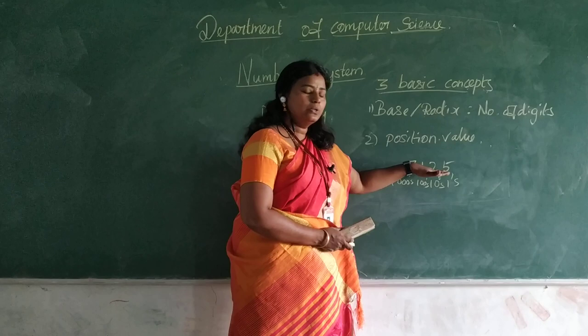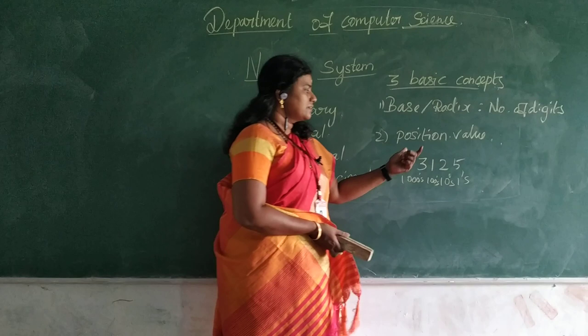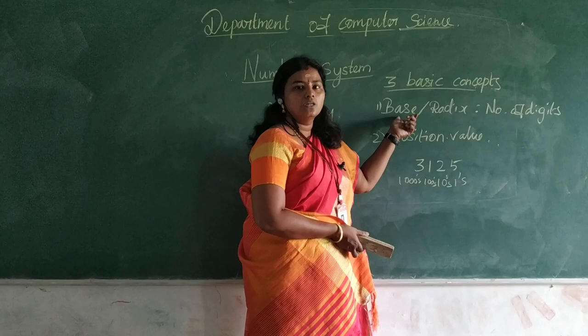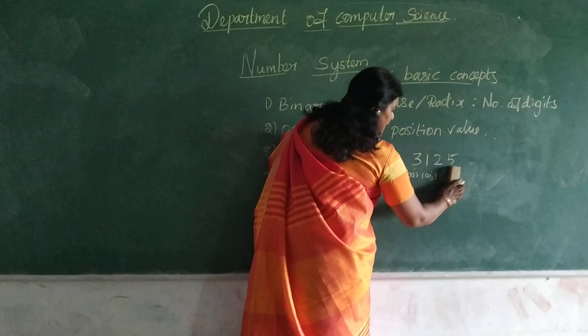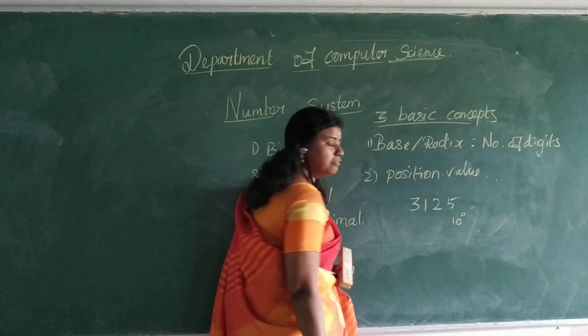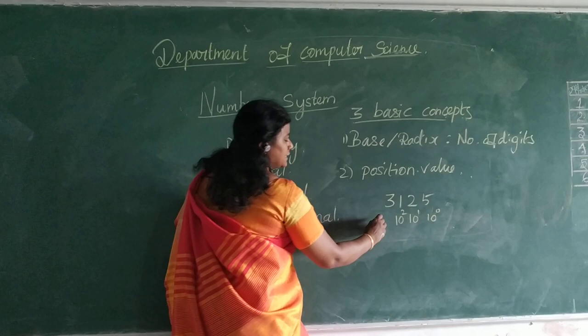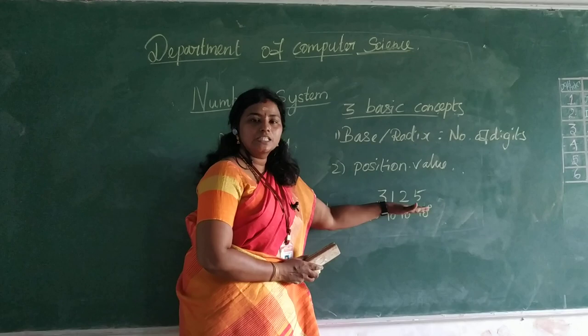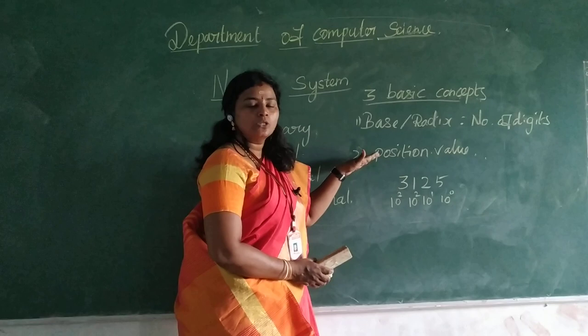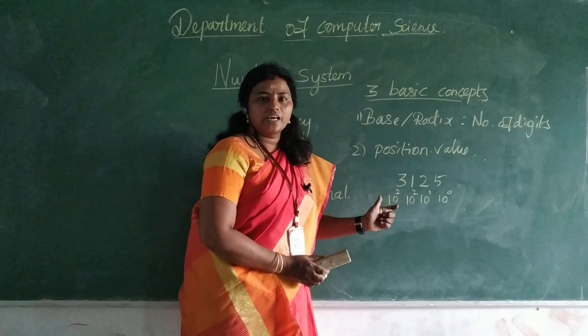In positional value, each and every digit has some weight value. This weight value is represented using its base value — specifically the power of the base value. For example, 5 is represented as 5 multiplied by 10 to the power of 0. And 2 has weight value 10 to the power of 1. And 1 has weight value 10 to the power of 2. And 3 has weight value 10 to the power of 3. So likewise, the value is calculated from right to left.